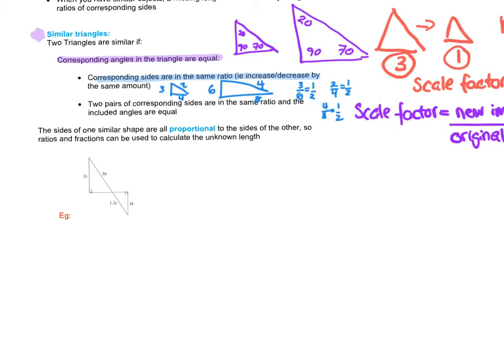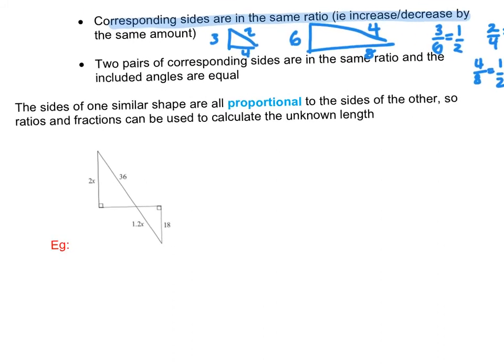The other way you can tell if they're similar: two pairs of sides are corresponding in the same ratio and one angle is equal. So that means if you can see the two sides have been enlarged by the same amount and there's an angle that's the same in there. The sides of one similar shape are all proportional to the sides of the other. If the shapes are similar, they've been enlarged or reduced by the same amount. So here it says calculate the unknown length.